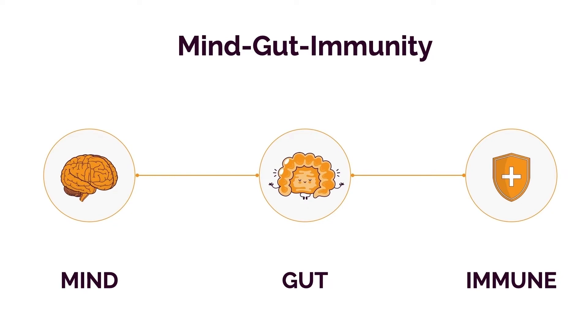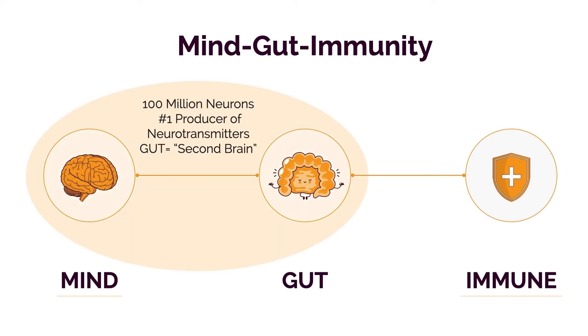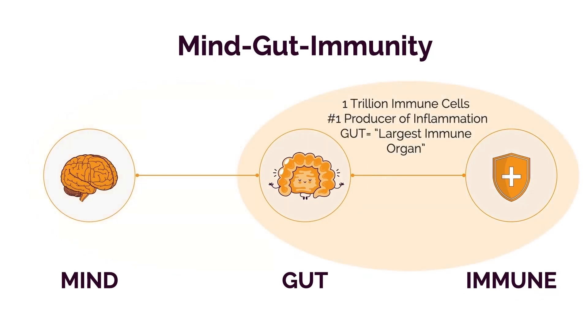The gut contains 100 million neurons and is the largest producer of neurotransmitters in the body — that's why it's earned the nickname 'the second brain.' It's also host to one trillion immune cells, which means a majority of your immune system is actually housed in the gut. The most important question you can ask yourself comes back to the Big Five epigenetic environmental triggers: diet, digestion, sleep, stress, and exercise.